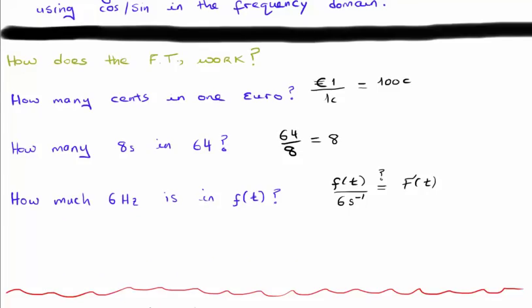How does the Fourier transform work? Well if I was to ask you how many cents do you have in one euro you would divide one euro by one cent to get 100. You do the same thing to find out that there are eight eighths in sixty four. So if you wanted to find out how many six hertz signals are in your initial signal perhaps you would divide your initial signal by six hertz. Is that what the Fourier transform is doing?